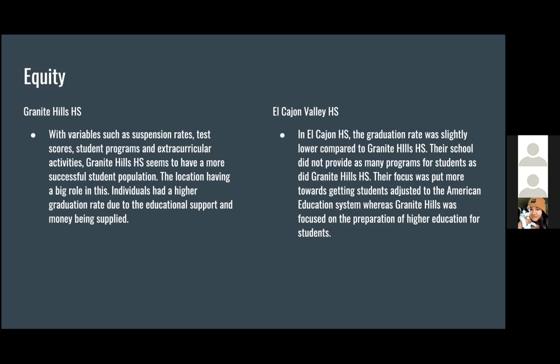In terms of equity, looking at the variables shown — suspension rates, test scores, and student programs — Granite Hills seems to have a more successful student population, not only in graduating high school but in likely pursuing higher education at a community college or four-year university. El Cajon's graduation rate is slightly lower, and the school doesn't provide as many programs to give students the push or desire to graduate or pursue higher education compared to Granite Hills.